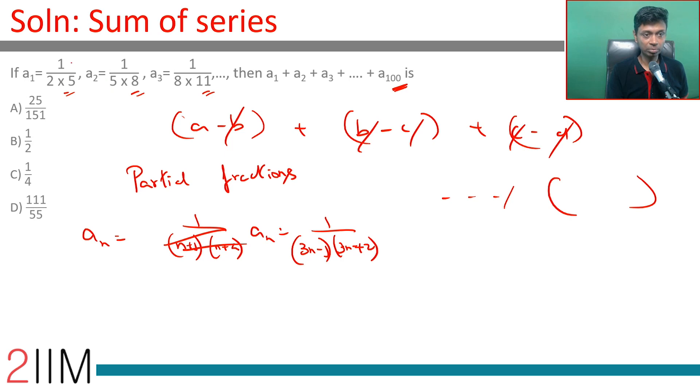Why 3N? Because this goes up in steps of 3, these are anchoring around multiples of 3. I am going to link A1 to 2, A2 to 5, A3 to 8. What is this sequence? This is 3 minus 1, 6 minus 1, 9 minus 1. So this first term is 1 by 3N minus 1, second term is this plus 3: 3N plus 2.